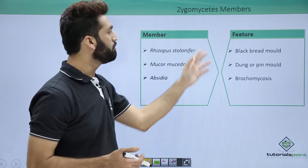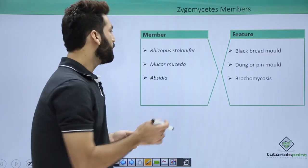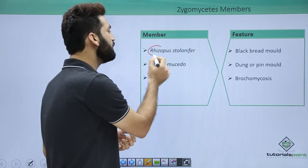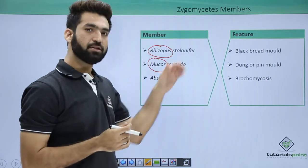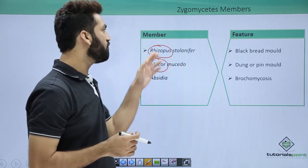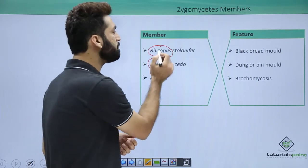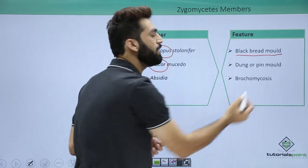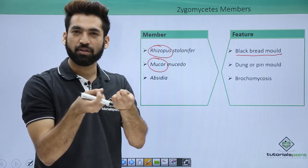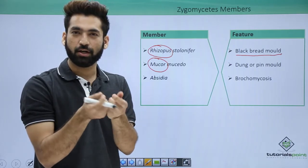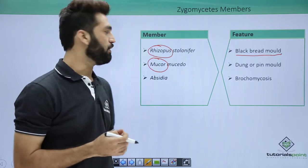The important members of zygomycetes are Rhizopus and Mucor. Rhizopus is also called bread mold. You may have seen bread sometimes when placed in moisture — the mold that grows with mycelia on it is actually the Rhizopus mold.